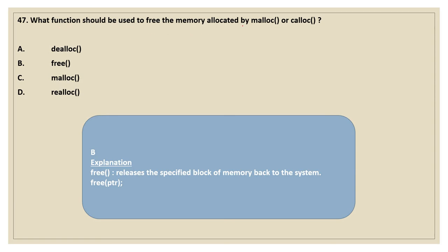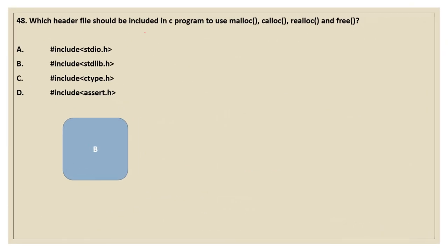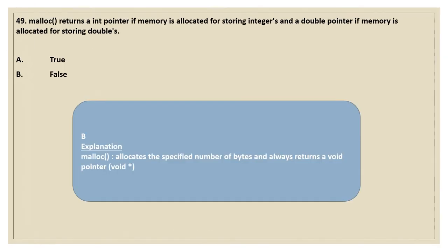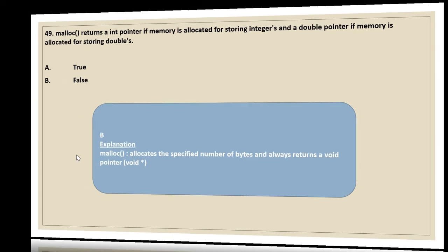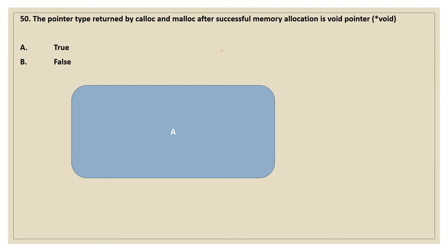Moving on to the 47th question — what function should be used to free the memory that has been allocated by malloc or calloc? The function used to free the memory is the free function. 48th question: which header file should be included to use malloc, calloc, realloc, and free? We have to use stdlib.h — this header file has to be included to use all these functions. 49th question: malloc returns an int pointer if memory is allocated for integer and a double pointer if for double — no, that is false. Because malloc or calloc will return only a void pointer. So B is our answer — false. 50th question: the pointer returned by calloc and malloc on successful memory allocation is a void pointer — yes, that is true.